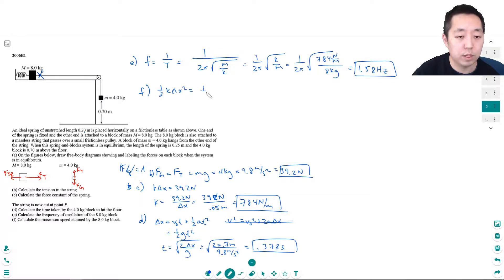So v max is equal to the square root of k delta x squared divided by m.